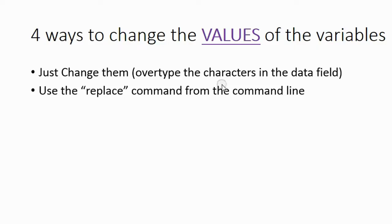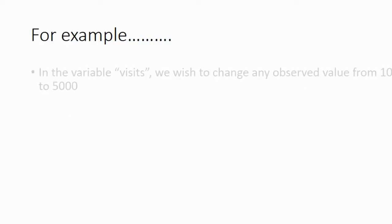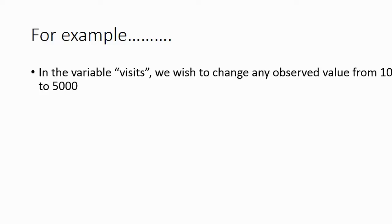Obviously these two ways are very inefficient. If we had thousands of observations and dozens of variables, we could not go through each box one at a time. We need to tell Stata to take every instance of a particular value and change it to what we need. So in order to do that, we will use the recode command. For example, in the variable visits, we wish to change any observed value from 10 to 5,000 — even if there were dozens of appearances — all in one shot.